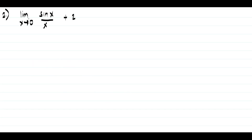For example number 2, we have the limit of sine x over x as x approaches 0, plus 2. To simplify, always remember that the limit of sine x over x as x approaches 0 is always equal to 1.